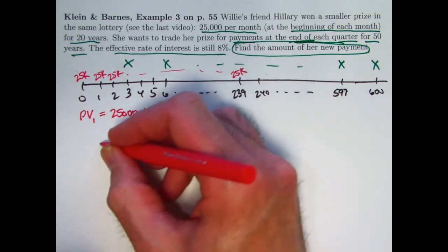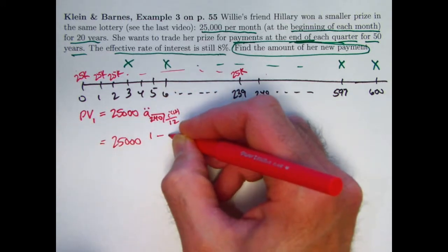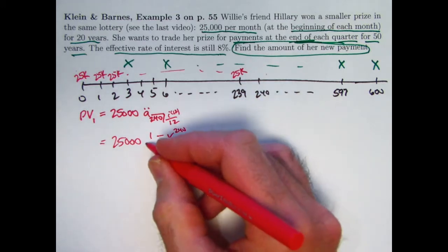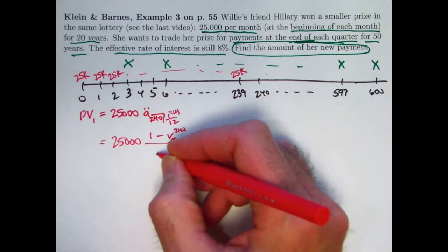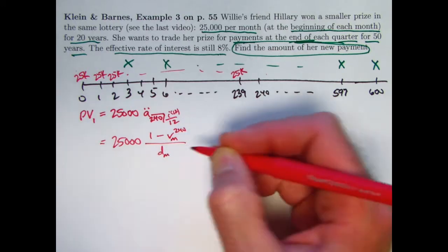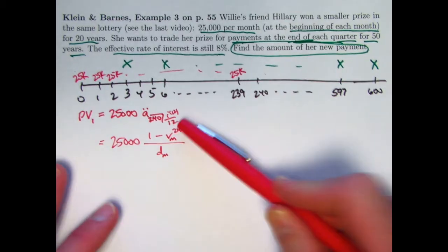And if we use the formula for A double dot, it's 1 minus V to the 240th, where this would be a monthly V, a monthly discount factor, divided by, for an annuity due, it would be D, the discount rate, and this would be a monthly discount rate. Let me just put subscripts of M to emphasize that these things are monthly. I could have called this I-sub-M, I suppose.